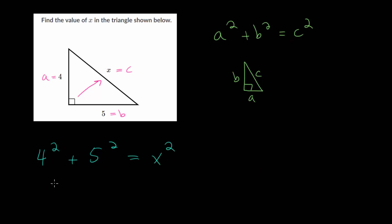So now just simplifying, 4 times 4 is 16, 5 squared, that's 5 times 5, that is 25, and this is equal to x squared, and we can add these together. So if we add 10 to 25, that brings us to 35, adding 6 more goes to 41.